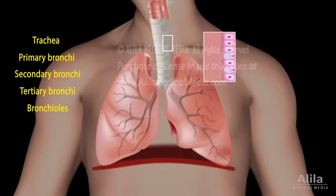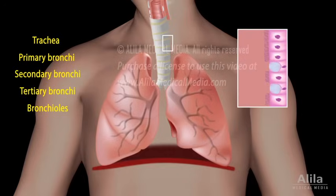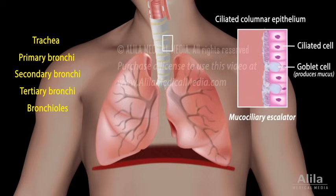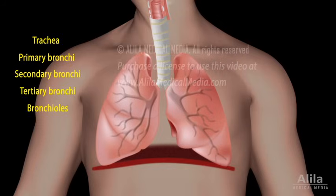The larynx, trachea, and bronchial tree are lined with ciliated columnar epithelium, which produces mucus and functions as a mucociliary escalator. The mucus traps inhaled particles, while the beating cilia move the mucus up toward the throat, where it is swallowed.